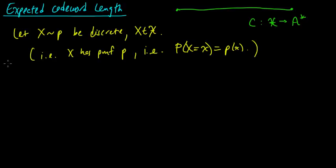And now consider the discrete memoryless source, in which we take a sequence of random variables X1 to Xn, and each of them has this pmf p, and they're independent and identically distributed.